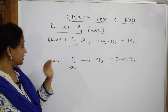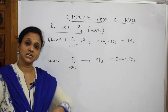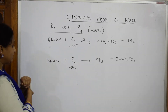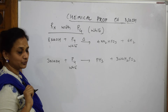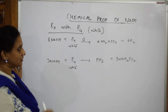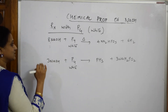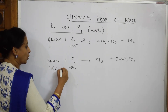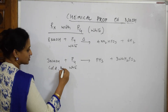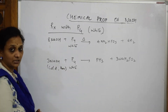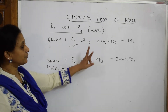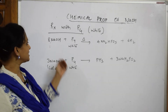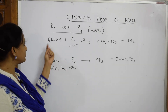Now, when sodium hydroxide reacts with white phosphorus — we have white phosphorus, red phosphorus, and black phosphorus — two products are formed. What you need to remember is that the sodium hydroxide taken here is cold and concentrated. Stoichiometry is different in both cases, but the phosphorus used is white in both.